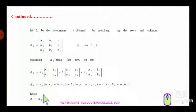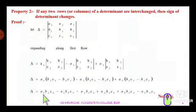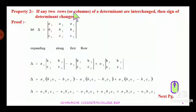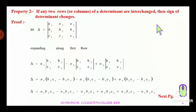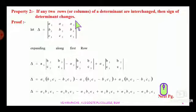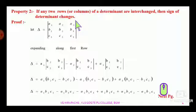Moving to the second property: if any two rows or two columns of a determinant are interchanged, then the sign of the determinant changes. In this property it is clearly stated that if any two rows or two columns of a determinant are interchanged, the value of the determinant changes in its sign.